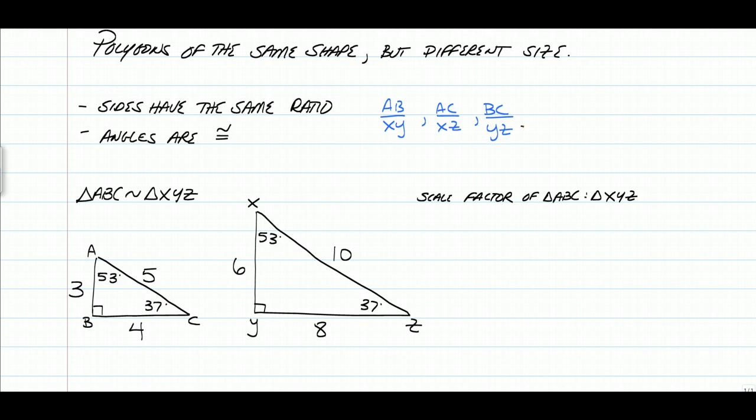And if we were to look at every single one of those with the given dimensions here, we have 3 over 6 for this one. This one we had 5 over 10. And BC over YZ was 4 over 8. And if you reduced every single one of those fractions, they would all simplify to one half. Okay, so AB is half of XY.